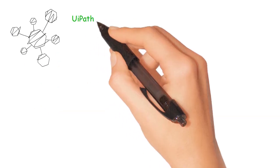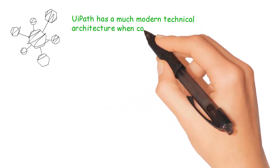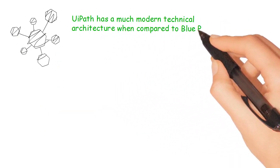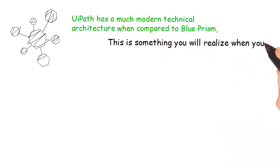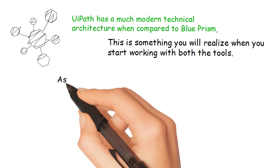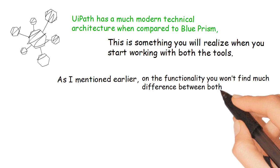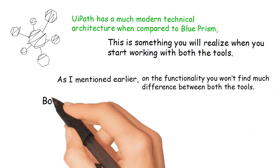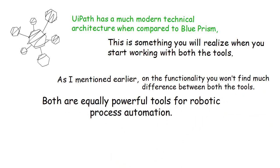Technical Architecture: UiPath has a much more modern technical architecture when compared to Blue Prism — this is something you will realize when you start working with both tools. On functionality, you won't find much difference between both tools; both are equally powerful tools for robotic process automation.